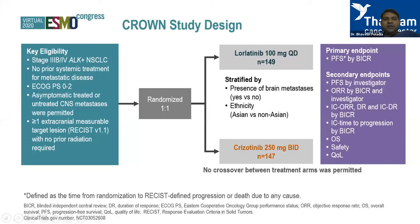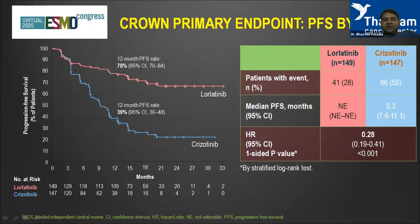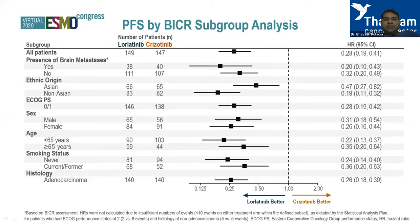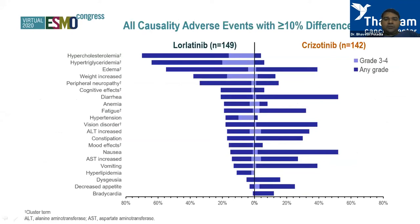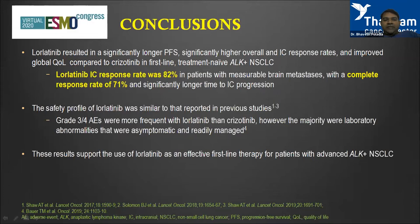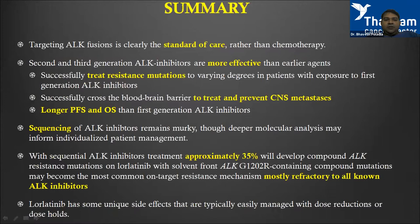For the third generation in the first-line setting, the CROWN study compared lorlatinib with crizotinib and showed a staggering difference again: crizotinib at 10 months PFS versus lorlatinib with PFS not yet achieved — we await whether it crosses alectinib's landmark of 34.8 months. PFS was good across all subgroups. Lorlatinib showed an excellent intracranial response of almost 82 percent with 71 percent complete response, better than most first- and second-generation TKIs. This supports lorlatinib as an effective first-line therapy.